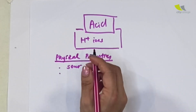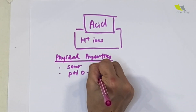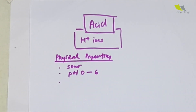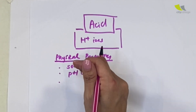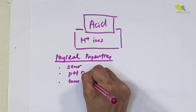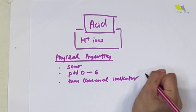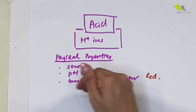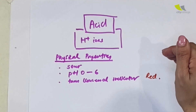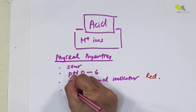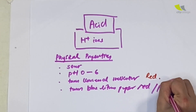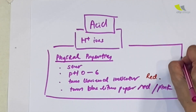The pH level of acids ranges from 0 all the way to 6. Zero is the most acidic; six means it is a weak acid — the smaller the number, the more acidic it is. Acids turn universal indicator red, orange, or yellow, and they also turn blue litmus paper red or pink. These are the physical properties of acids.